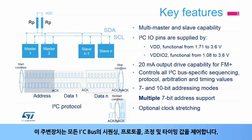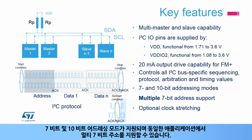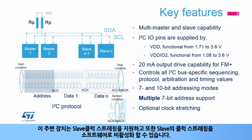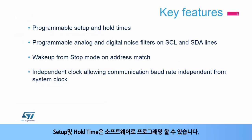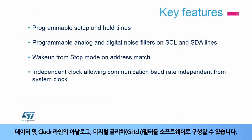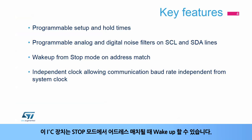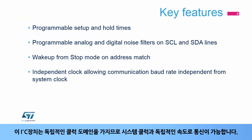The peripheral controls all I2C bus-specific sequencing, protocol, arbitration, and timing values. 7- and 10-bit addressing modes are supported, and multiple 7-bit addresses can be supported in the same application. The peripheral supports slave clock stretching, and clock stretching from slave can be disabled by software. The setup and hold times are programmable by software. Analog and digital glitch filters on the data and clock lines can be configured by software. The peripheral can wake up the MCU from stop mode when an address match is detected. The peripheral has an independent clock domain, which allows a communication baud rate independent from the system clock.